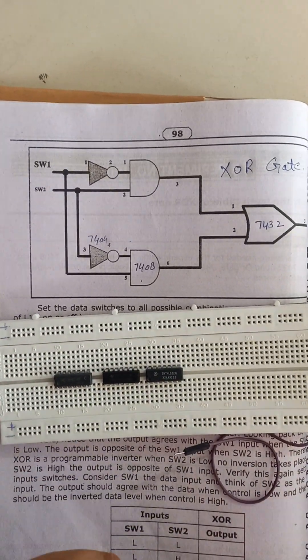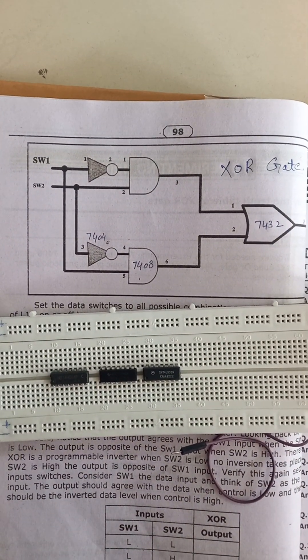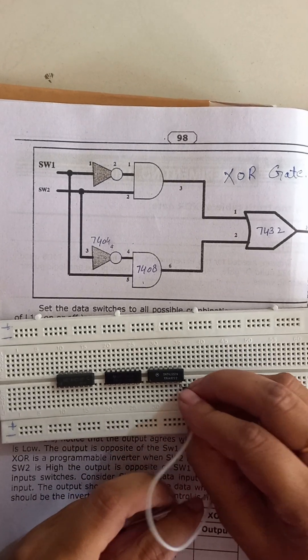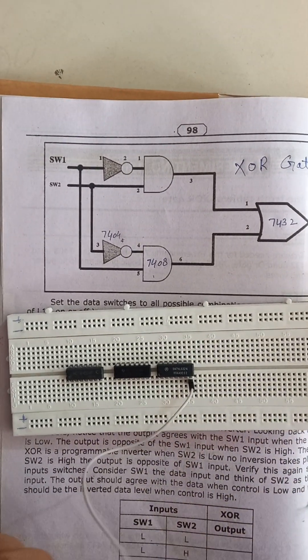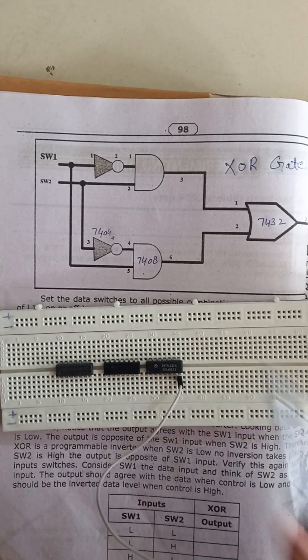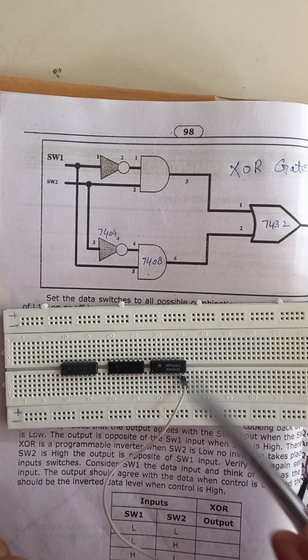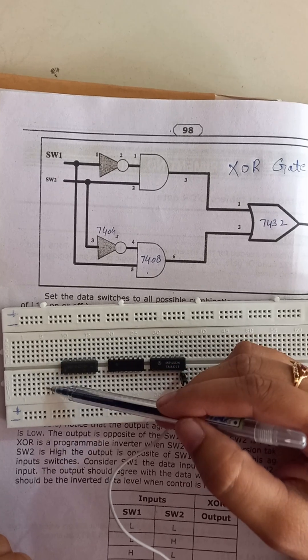Now all ICs should be ground and plus VCC. Pin number 7 connected to the ground. These lines are horizontally connected and these lines are horizontally connected, but these lines are vertically connected.